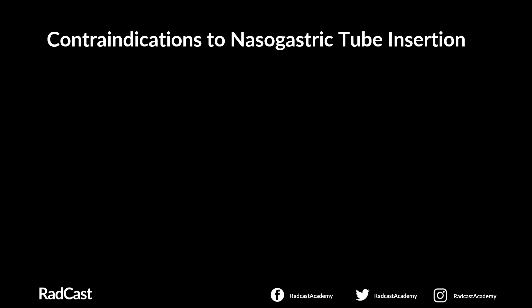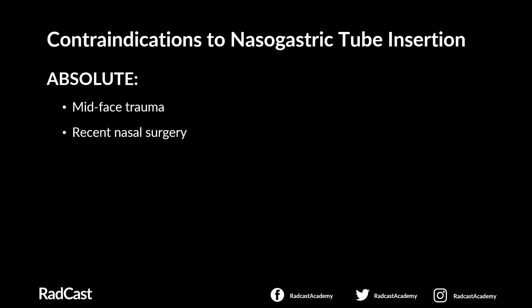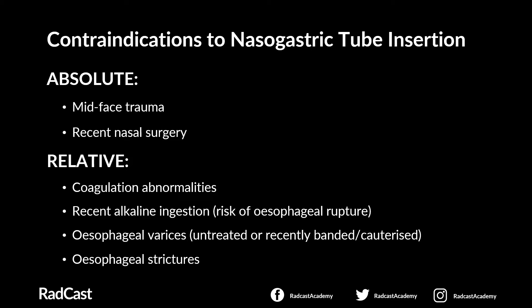It's important to understand the contraindications to NG tube insertion. Absolute contraindications include mid-face trauma and recent nasal surgery. Relative contraindications include coagulation abnormalities, recent alkaline ingestion which increases the risk of oesophageal rupture, oesophageal varices either untreated or recently banded, and oesophageal strictures. In the presence of relative contraindications, the advantages and disadvantages of NG placement must be weighed against the reason for the NG and the patient's condition.